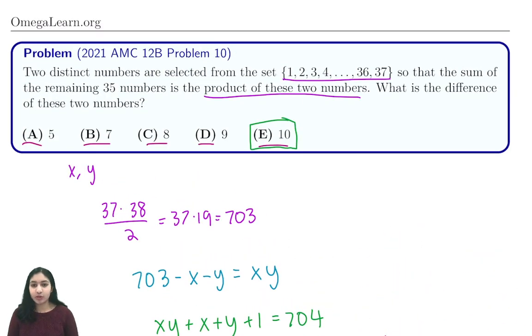So since this problem is pretty straightforward, it might be a good idea to plug in our answer. So we know that if we remove 31 and 21, their product is going to be 703 minus 31 and 21, and this is just something that you want to double-check in case your answer is wrong, so this calculation isn't going to take too long.